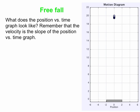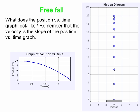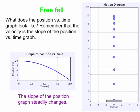Finally, let's think about what the position graph looks like. The velocity is the slope of the position versus time graph, and the velocity is steadily changing as time goes by. The position graph starts off with zero slope because the velocity is zero, and then the slope gets more and more negative — so we get a parabola. This is characteristic of free-fall motion, motion under gravity, where the slope of the position graph steadily changes.